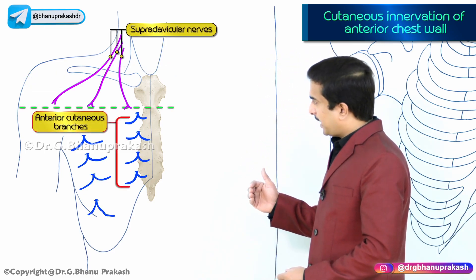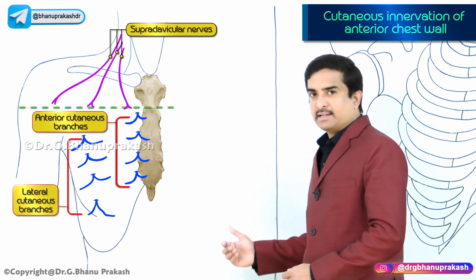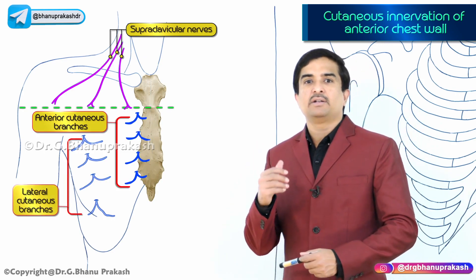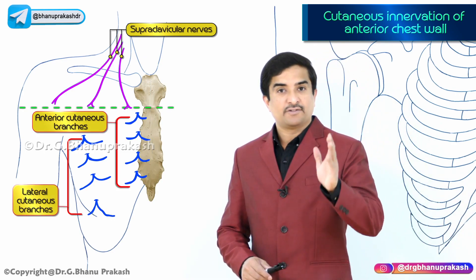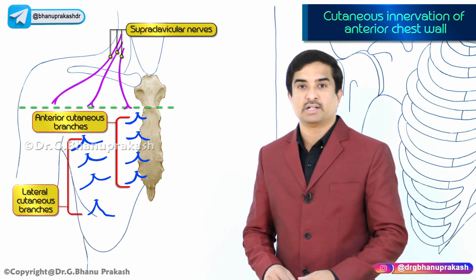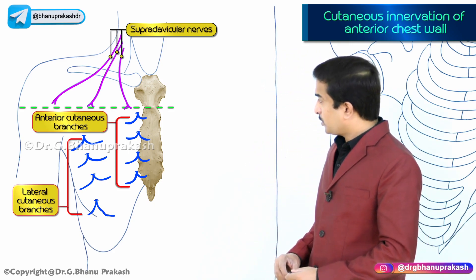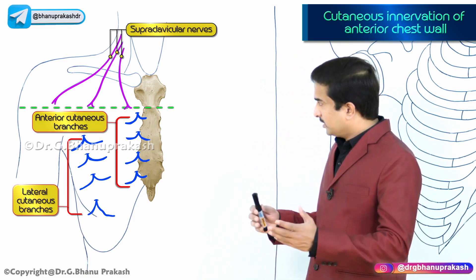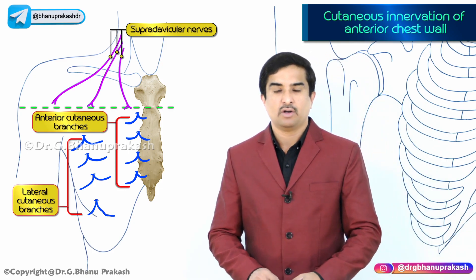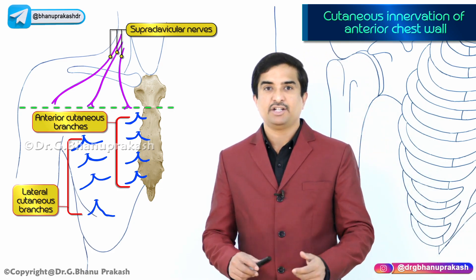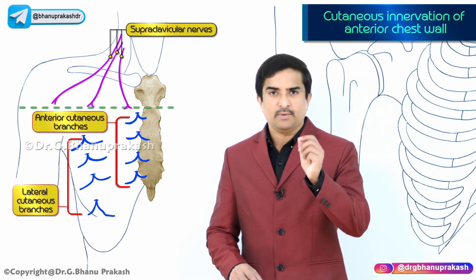The skin below this horizontal line is supplied by the anterior as well as the lateral cutaneous branches of the second to sixth intercostal nerves, that is T2 to T6. This covers the cutaneous innervation of the anterior chest wall.